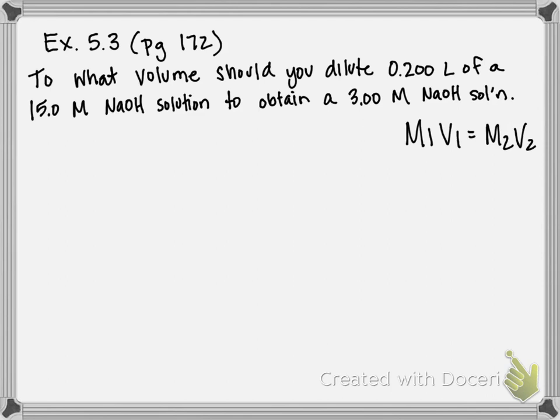So we're given three variables that we can utilize to plug into our solution-dilution equation and solve for the final variable. We have three out of four for solving for the final one. So the trick with these is making sure to understand which variables you're given.